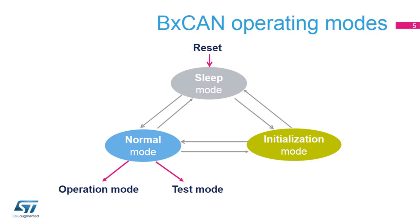The BX CAN enters initialization mode via software to allow configuration of the peripheral. Before entering normal mode, the BX CAN must synchronize with the CAN bus, so it waits until the bus is idle. This means 11 consecutive recessive bits have been monitored on pin CAN RX.